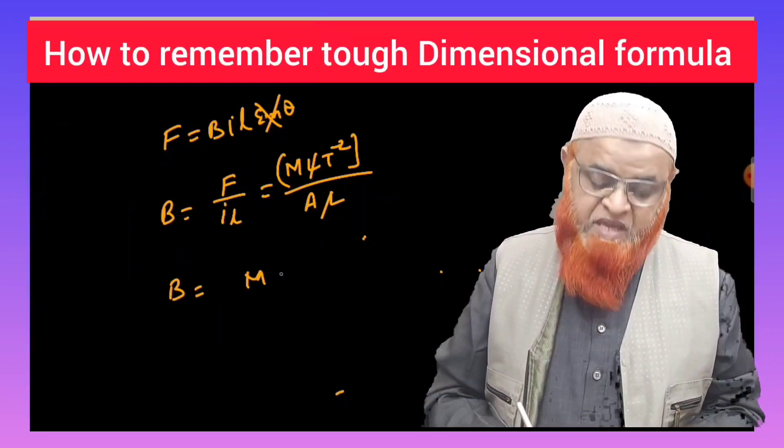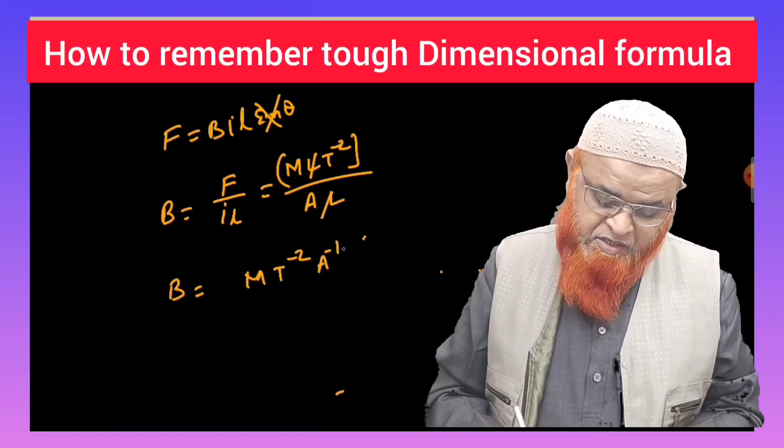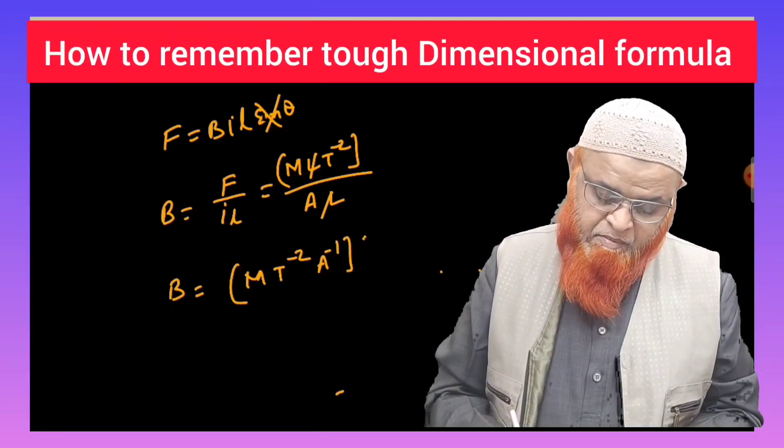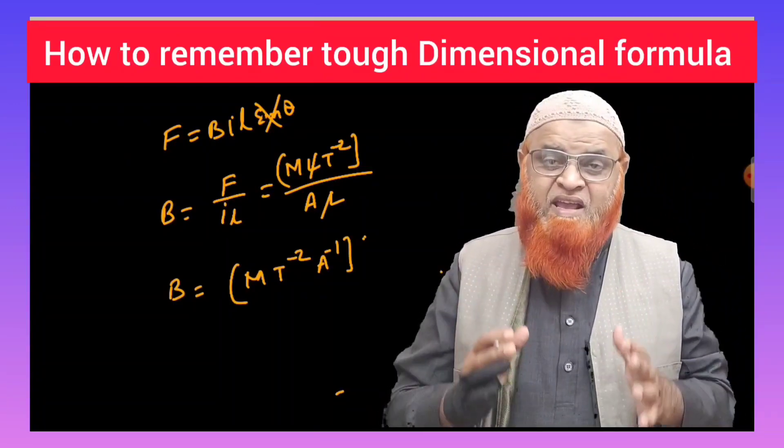You will be getting the dimensional formula for B as M, T power minus 2, and A power minus 1. Like this, we can remember the dimensional formula for magnetic induction.